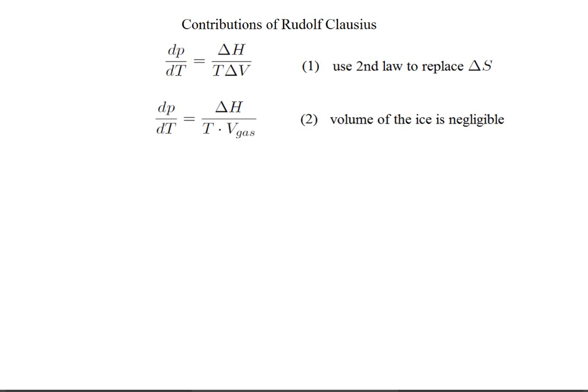In line two, Clausius made an approximation, namely that the volume of gas is so much larger than the volume of ice that he could safely change delta V to the volume of gas only. One mil of ice is 1,250 mils of water vapor at standard pressure and temperature, and a whole lot more as the pressure goes down a little.